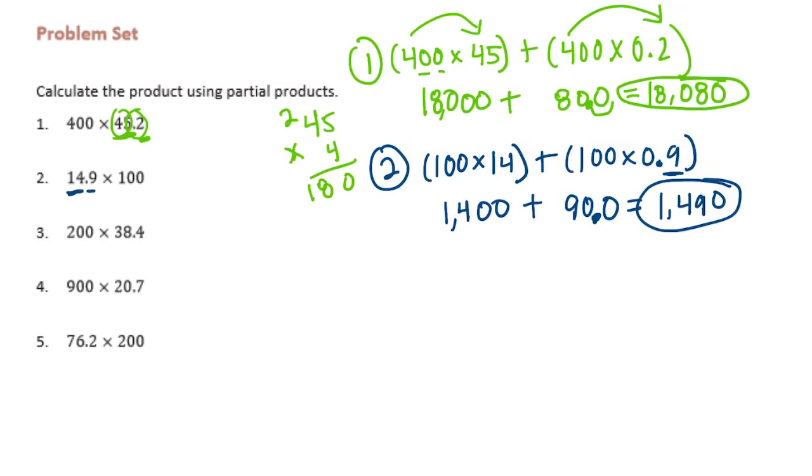Number 3, 200 times 38.4. I'm going to split 38.4 up and multiply 200 times 38 plus 200 times 0.4. So 2 times 38 is equal to 76, so 200 times 38 would be 7,600.